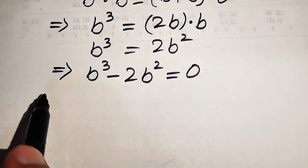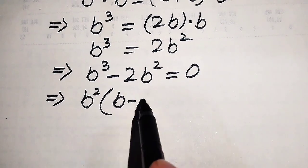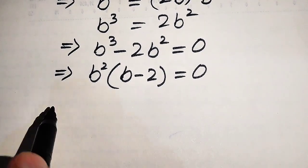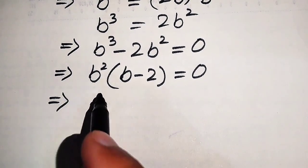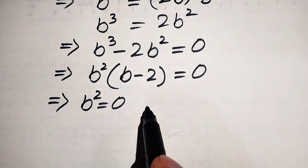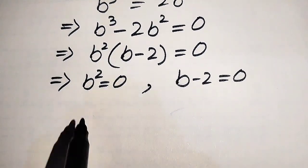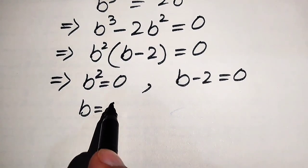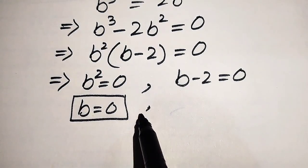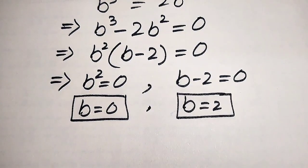In the next step, we take b squared as a common factor, and the remaining values give us b minus 2 equals 0. We then split this into two cases: the first case is b squared equals 0, and the second case is b minus 2 equals 0. From the first case, b equals 0, and from the second case, b equals 2. These are the two roots of the given equation.